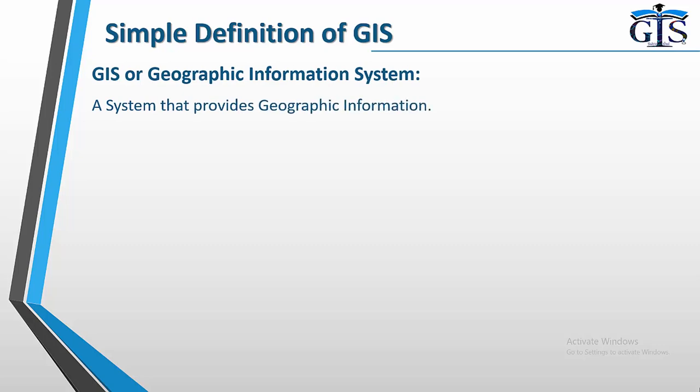Good day GIS lovers! Let's see the simple definition of GIS. If you search on the internet about the definition of GIS, you will get many types of definitions, such as it means gathering, managing and manipulating database. It is the combination of spatial and non-spatial database. It is the combination of hardware, software and many more.